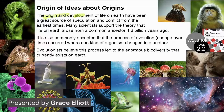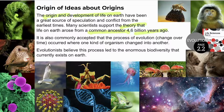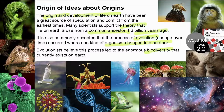The origin and development of life on earth has always been a great source of speculation. Many scientists support the theory that life on earth arose from one common ancestor billions of years ago and that evolution occurred — one kind of organism changing into another. Evolutionists believe this process led to immense biodiversity on planet earth. Note: this evolutionary theory does not propose an explanation for the origin of life, but the origin of species.